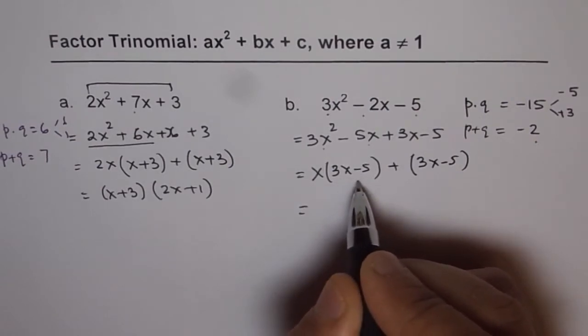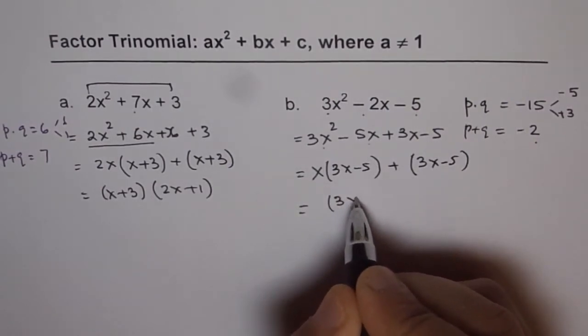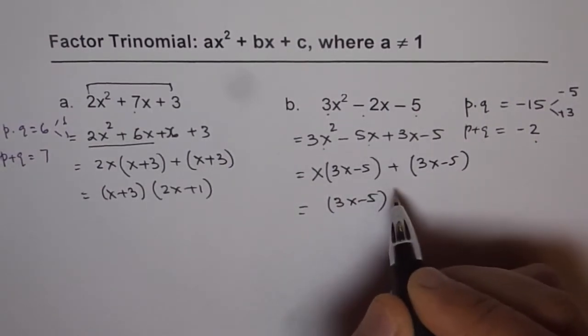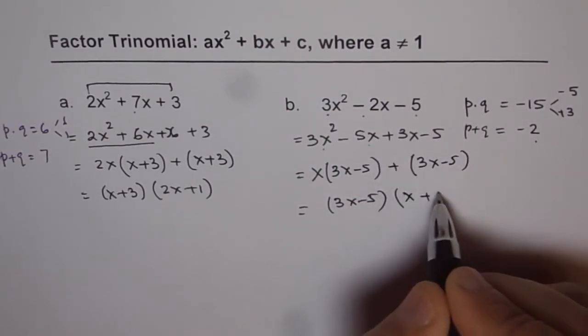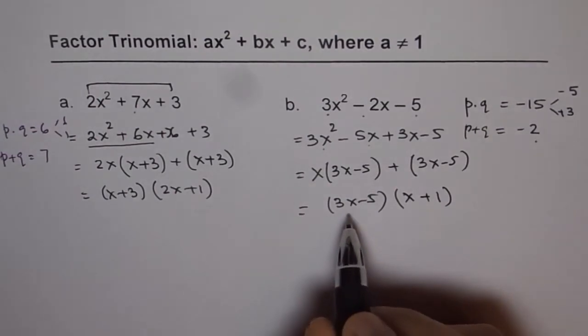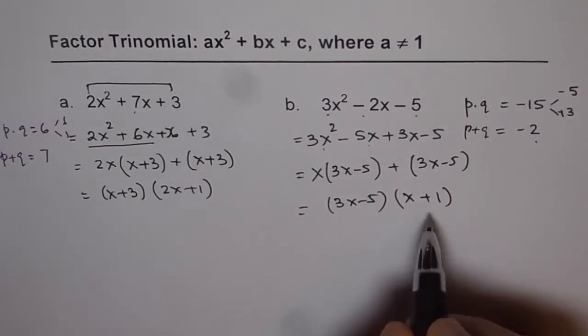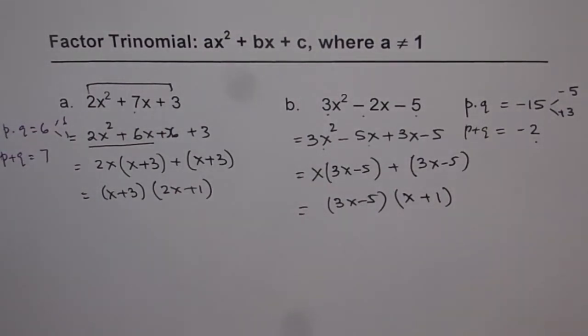Now, as you can see, 3x - 5 is a common factor. So, once you factor it, from the first term, you get x and from the second, you get 1. So, 3x - 5 times x + 1 is the factored form of trinomial 3x² - 2x - 5.